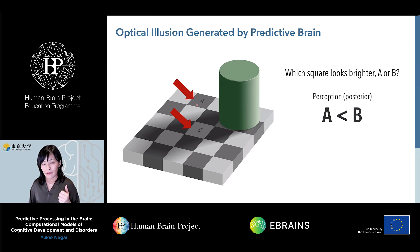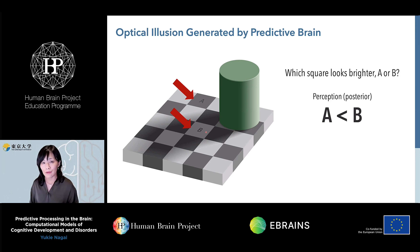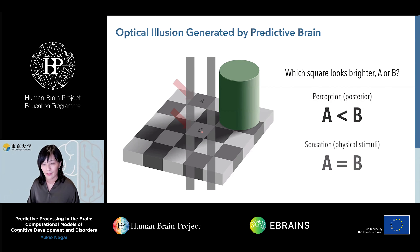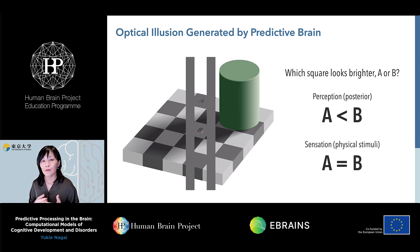The reason why you first perceive region B as brighter than A is that your brain predicts the world. You have knowledge about the checkerboard and also the rules of shadow, so you expect region B to still look brighter even in shadow. This example nicely demonstrates that even in a very simple perceptual task, your brain works as a predictive machine. Our question, then, is to what extent this predictive coding story can account for the many cognitive behaviors observed in humans.